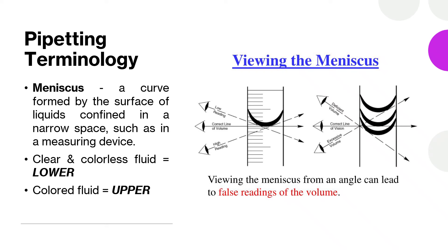Another pipetting terminology is the meniscus. A meniscus is the curve formed by the surface of liquids confined in a narrow space, such as in a measuring device. Imagine a graduated cylinder with water in it — you can see a curve formed at the surface of the liquid. That is what we call the meniscus.